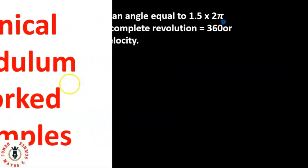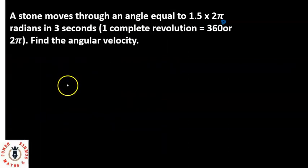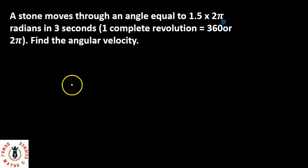Our first question says that a stone moves through an angle equal to 1.5 times 2π radians in 3 seconds. Find the angular velocity. We have a snippet here that says a complete revolution is the same thing as 360 degrees or 2π radians.